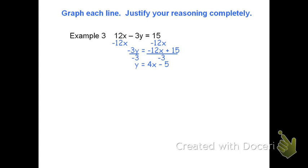My next step is to identify the slope and y-intercept. The slope of this line is 4, and the y-intercept is zero comma negative 5. Make sure you write it as a coordinate. I can now quickly graph this line.